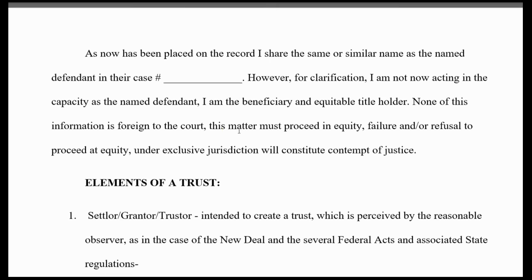It's been placed on the record that you share the same similar name as the defendant and their case number. However, for clarification, you are not now acting in that capacity — whether you've already started a case or at the beginning of the case, either one. You've got to make the statement: 'I'm not now acting in the capacity as the named defendant. I am the beneficiary and equitable title holder.' And they can't rebut this, folks — they can't.